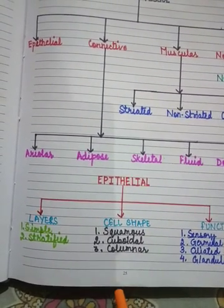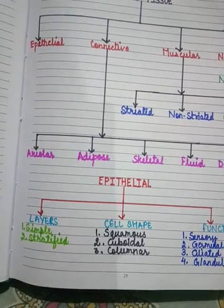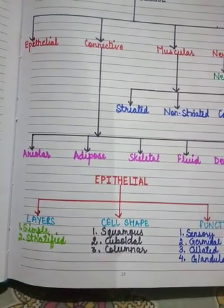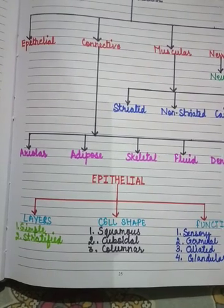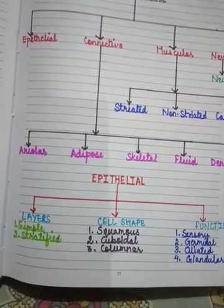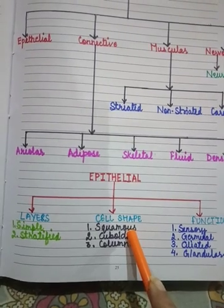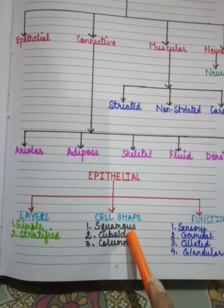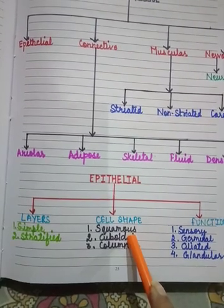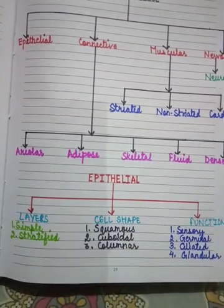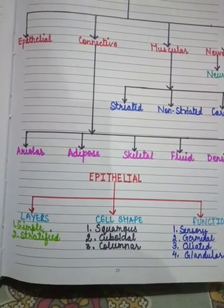First we'll start with squamous epithelium. They are composed of thin, flat cells with prominent nuclei that are closely packed. These are found in the lining of the skin, mouth, nasal cavities, blood vessels, and lymph vessels. Their function is to protect the underlying parts from mechanical injury, germs, and harmful chemicals, and to prevent cells from drying up.